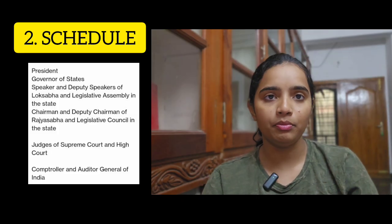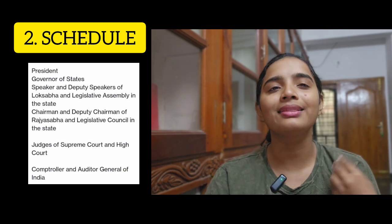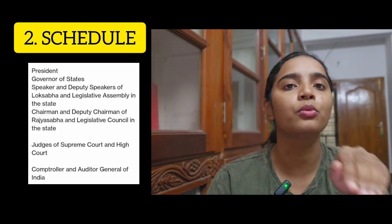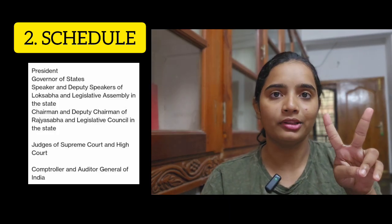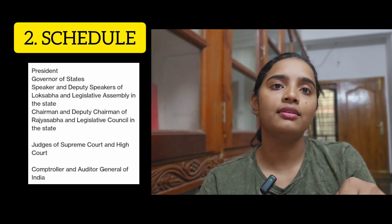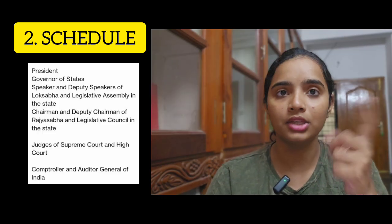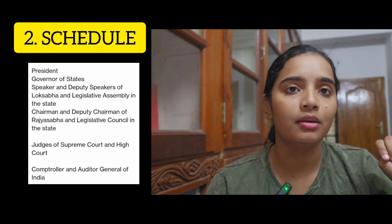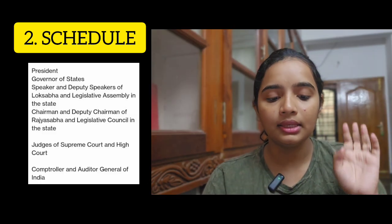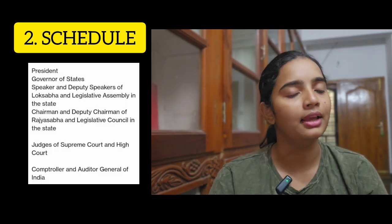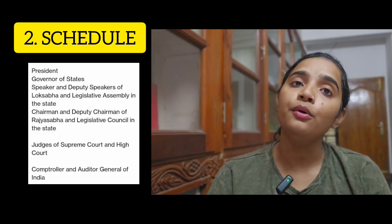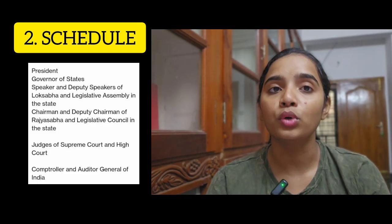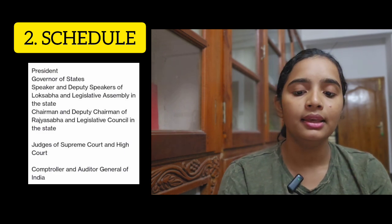They have a legislative council. In Uttar Pradesh, there is a Legislative Assembly and a Legislative Council. There are two boards. The Deputy Speaker and the Deputy Chairman. Legislative Council and Legislative Assembly are representative bodies. Judges of the Supreme Court and Judges of the High Court. The Controller and Auditor General of India — CAG. These are all the names.